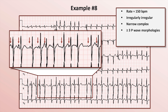The QRS complexes that don't seem to be preceded by a P-wave may simply have P-waves too small to be seen or obscured by the preceding T-wave. In summary, this is an irregularly irregular, narrow-complex rhythm with three or more different P-wave morphologies and without any one specific predominant P-wave. By definition, this is multifocal atrial tachycardia.